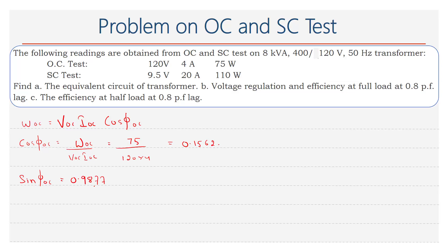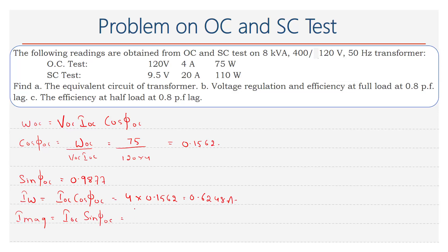Similarly, sin φoc is equal to 0.9877. Now let us calculate the current Iw, which is equal to Ioc into cos φoc. Ioc is 4 amperes, so 4 into 0.1562 equals 0.6248 amperes. Similarly, I-magnetizing is equal to Ioc into sin φoc, that is 4 into 0.9877, which equals 3.95 amperes.